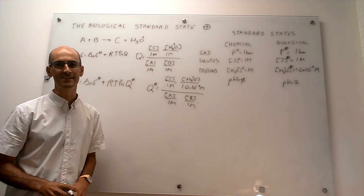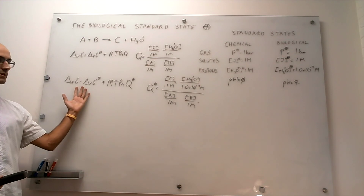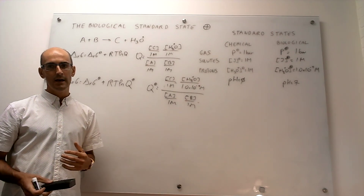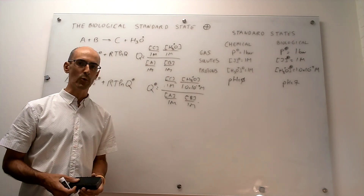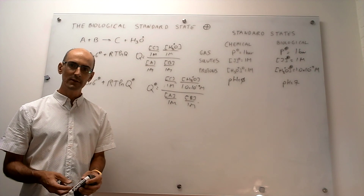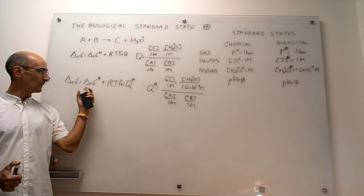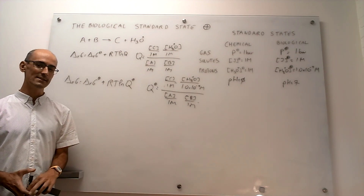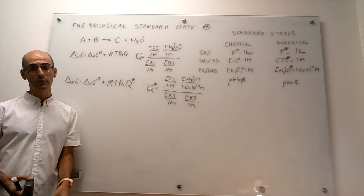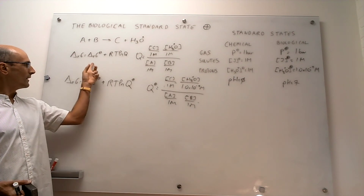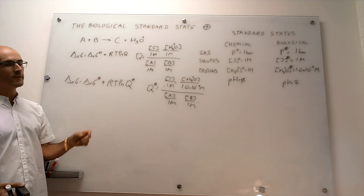In essence, that's what the biological standard state is — a more convenient way to think about running these calculations of the reaction Gibbs energy using a state that is closer to reality for in vivo applications. In the next video, we're going to explain, very briefly, how to actually calculate the reaction Gibbs energy at the biological standard state from the chemical standard state value, which we know how to calculate from tables — or the reverse: how to obtain the chemical standard state from the biological standard state.